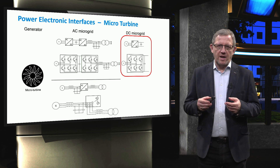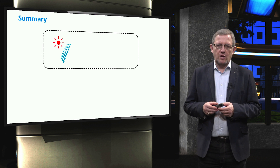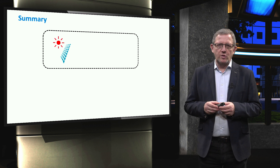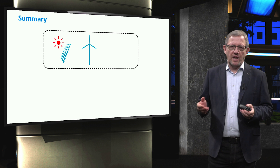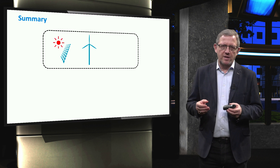Today, we gave an overview of power electronic interfaces for three types of distributed generators. First, we addressed photovoltaic systems connected to low and medium voltage levels and showed the possible power electronic interfaces. Secondly, we introduced three types of wind turbines: fixed-speed induction generator, doubly-fed induction generator, and permanent magnet synchronous generator, along with their possible power electronic interfaces. Finally, the connection of microturbines was discussed. We showed how these three components are connected to AC and DC microgrids. Next, we will review power electronic interfaces for various energy storage technologies in a microgrid.